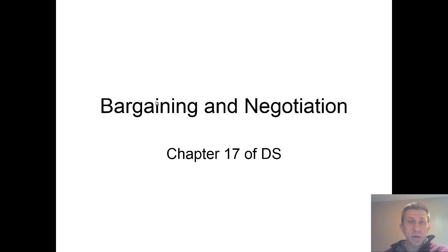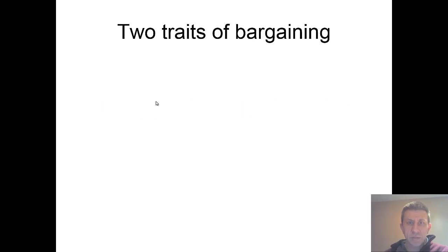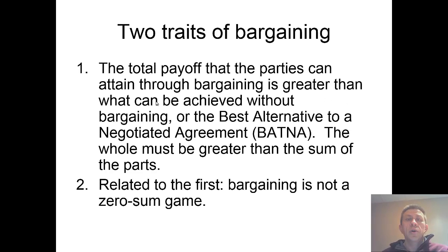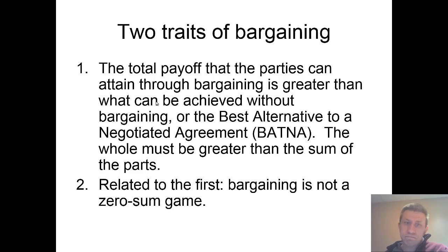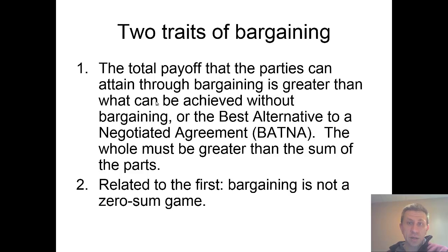Welcome to our lesson on bargaining and negotiation for our game theory class. In order to bargain, we should think about what needs to happen — what needs to happen for there to be a bargaining solution. The key point is that the total payoff the parties can attain through bargaining has to be greater than what you could receive outside of bargaining.